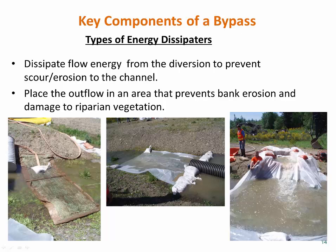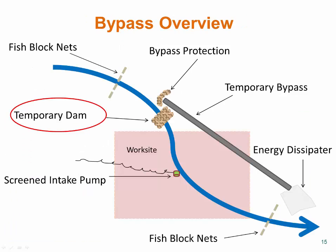Even when the creek is diverted through a bypass system, some leakage may occur or groundwater may enter the work site. Silty water pumped from the isolated work zone should be discharged upland for filtration, or contained in baker tanks, a detention pond, or other options prior to entering the creek.